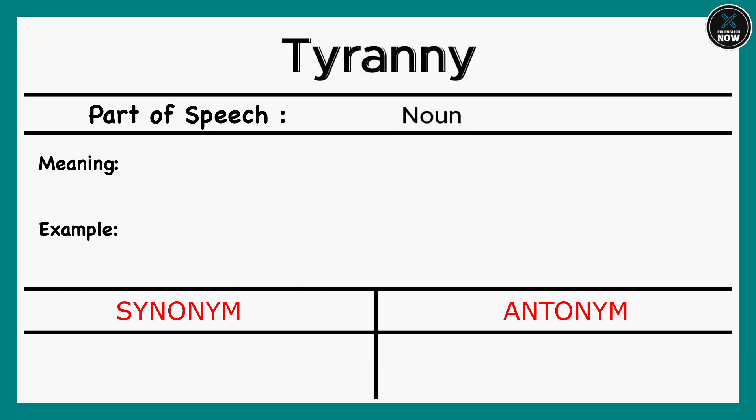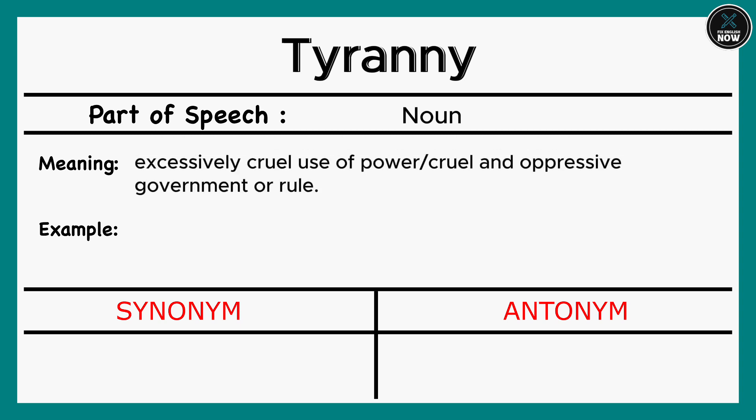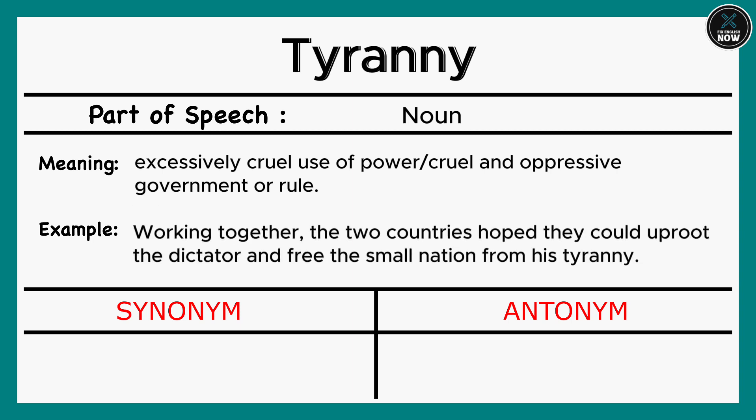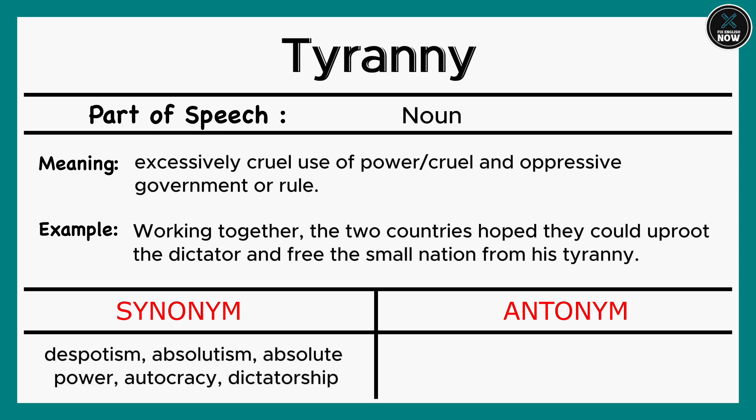Tyranny: Excessively cruel use of power or cruel and oppressive government or rule. Example: Working together, the two countries hoped they could uproot the dictator and free the small nation from his tyranny. Synonyms: Despotism, Absolutism, Absolute power, Autocracy, Dictatorship. Antonyms: Democracy, Liberality.